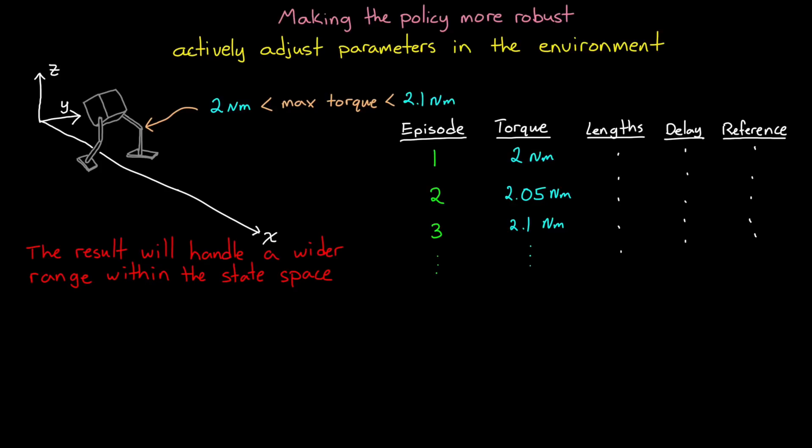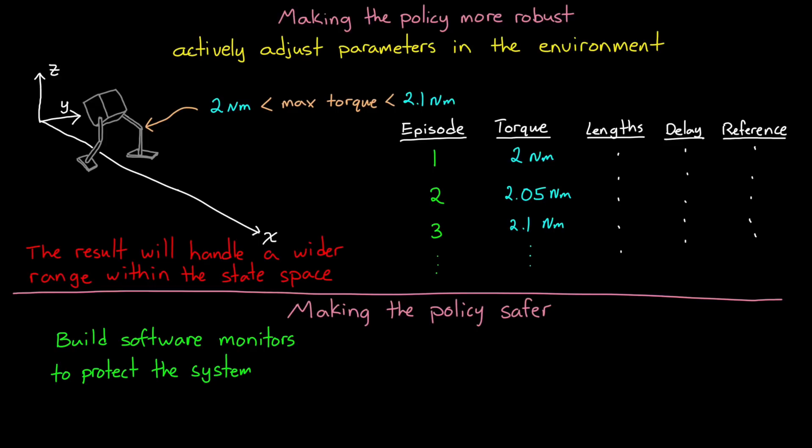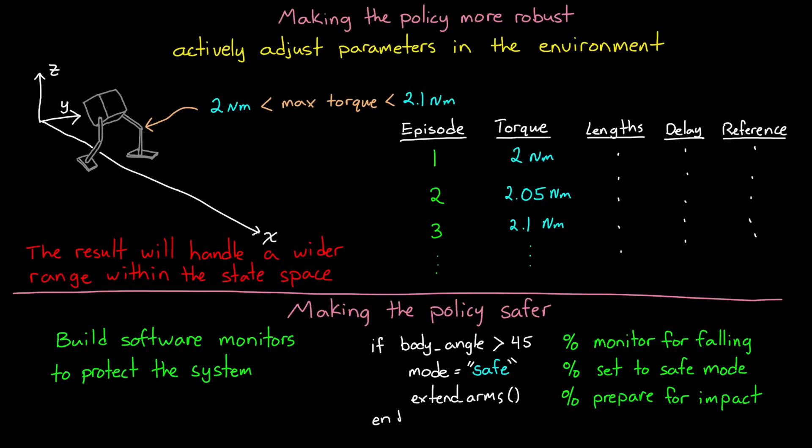So we need to also increase the overall safety of the system. And one way we can increase safety is by determining situations that you want the system to avoid, no matter what, and then building software outside of the policy that monitors for that situation. If that monitor triggers, then constrain the system, or take over and place it into some kind of safe mode before it has a chance to cause damage. This doesn't prevent you from deploying a dangerous policy, but it will protect the system, allowing you to learn how it fails and adjusting the reward and training environment to address that failure.